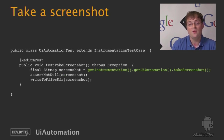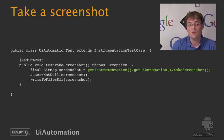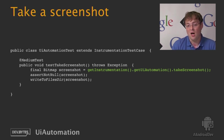Another cool feature which UI Automation introduces is capturing screenshots using the instrumentation framework. In order to retrieve a bitmap of the current screen content, we call takeScreenshot(), which returns a Bitmap object that can then be written to the file system.